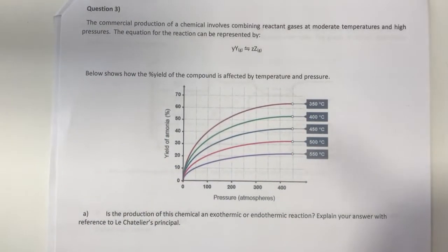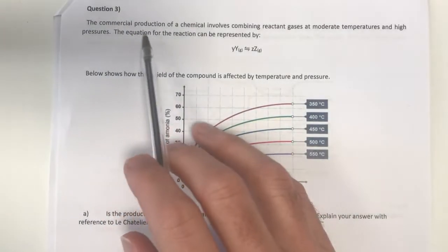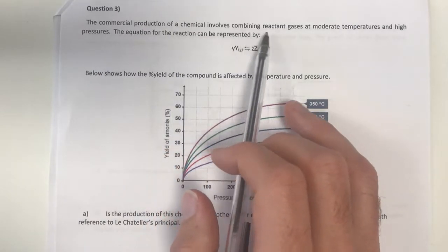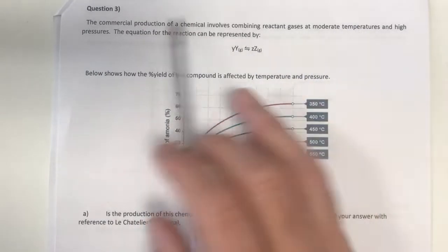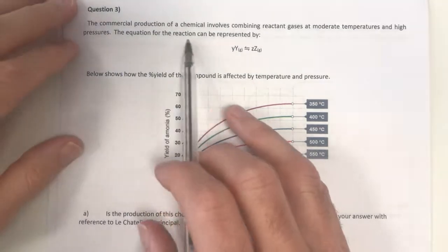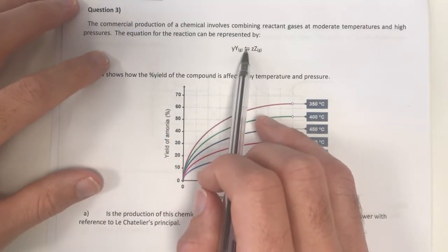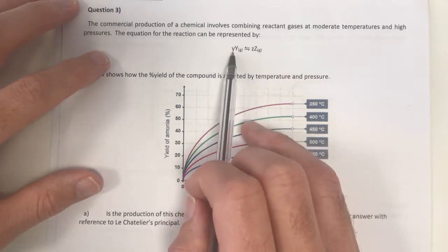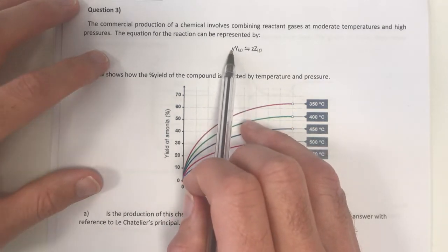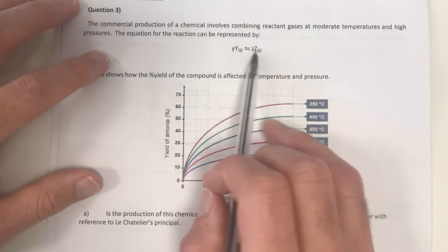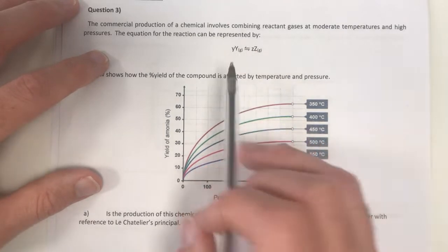Question number three for our practice test number two. The production of a chemical involves combining reacting gases at moderate temperatures and high pressures, and the equation for the reaction can be represented below. Y of y in equilibrium with z of z. So therefore these little y's are the coefficients, and the capital Y and capital Z are the things that we're looking at.